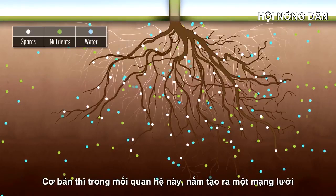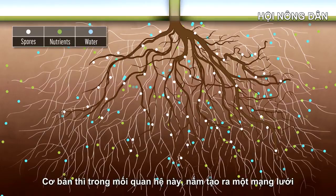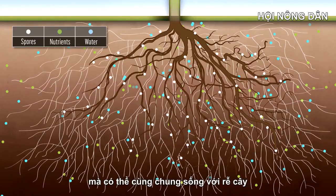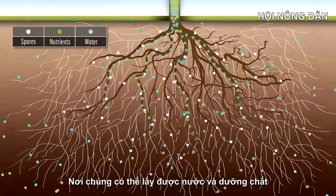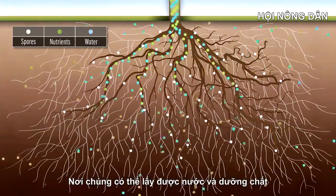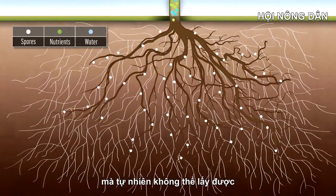Basically, mycorrhizae form a network of fine filaments that associate with the plant roots to draw nutrients and water from the soil that the root system would not be able to access otherwise.